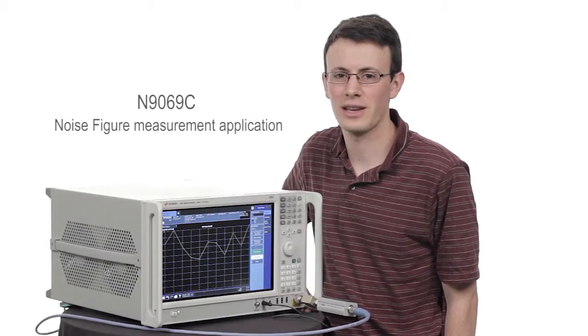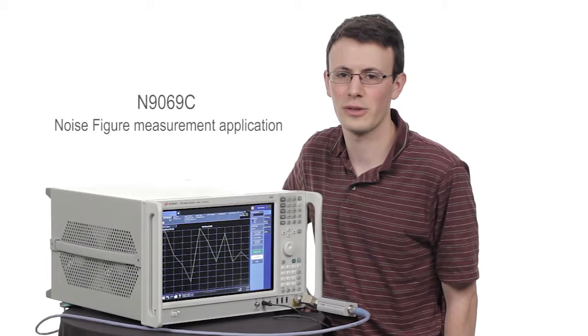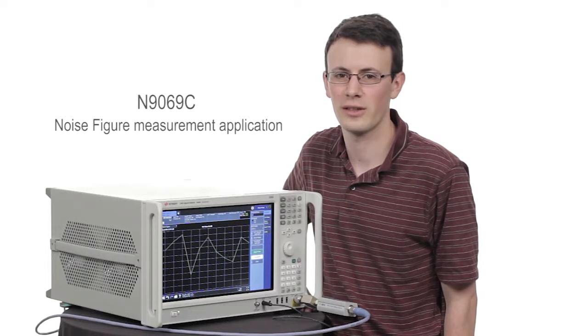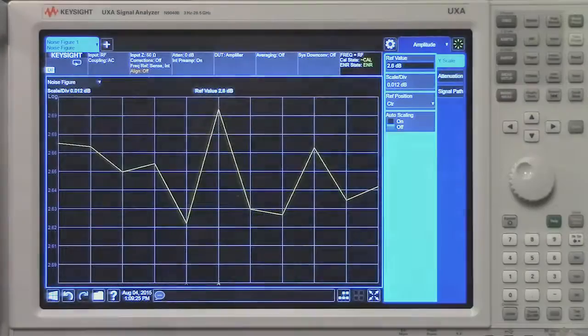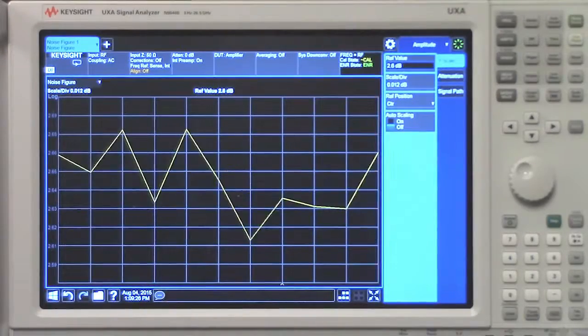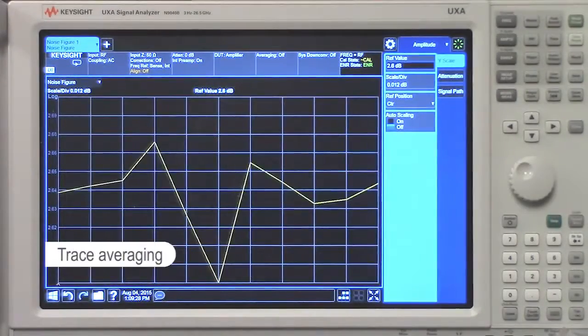Keysight's noise figure application gives you several tools to reduce this display jitter and get more consistent results. The first type of averaging I want to show you today is called trace averaging.